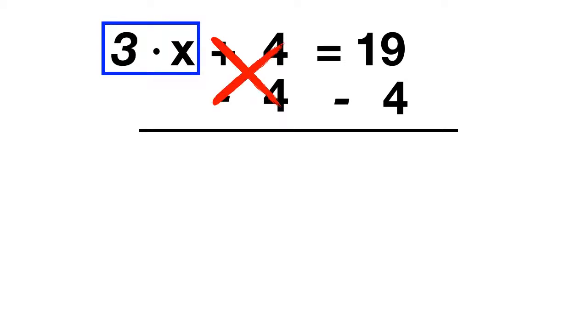On the left we have 3 times x. On the other side we have 19 minus 4. What does that equal? Well 19 minus 4 is 15. Now all we have to do is another step. We have to cancel the 3 times.